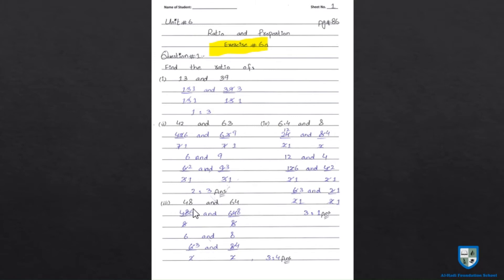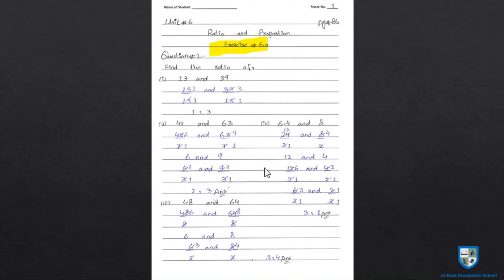Part 3: 48 and 64. एक ही number दोनों तरफ लेना है — 48 divided by 8 and 64 divided by 8. 48 में बहुत से numbers से divide हो सकता है बट ज़रूरी नहीं कि 64 भी उससे divide हो — ऐसा number लेना है जो दोनों को divide करे। 6 and 8 आए, बट यह अभी भी simplest form में आ सकते हैं — 2 से: 3's are 6, 4's are 8. So the answer is 3 is to 4.